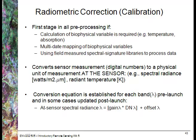Radiometric correction must be the first stage in all pre-processing in a number of situations: when calculating biophysical variables such as temperature or chlorophyll in vegetation, when doing multi-date mapping of biophysical variables, and when you want to use field spectral libraries with image data. This is the process of converting sensor measurements or digital numbers to a physical unit at the sensor, such as spectral radiance or temperature, using a conversion equation specific to that sensor.